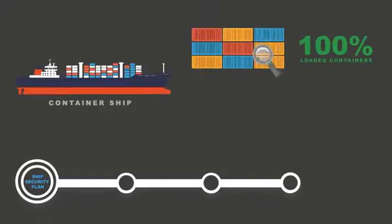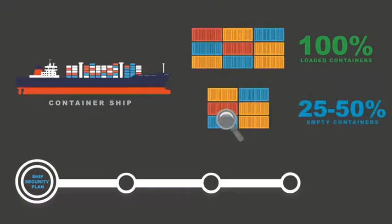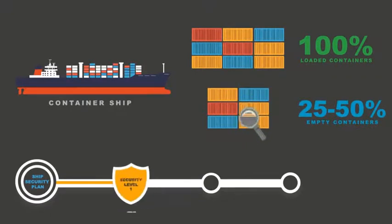On container ships, you should verify 100% of the container identification numbers for loading containers and 25-50% of empty containers against the manifest at security level 1.